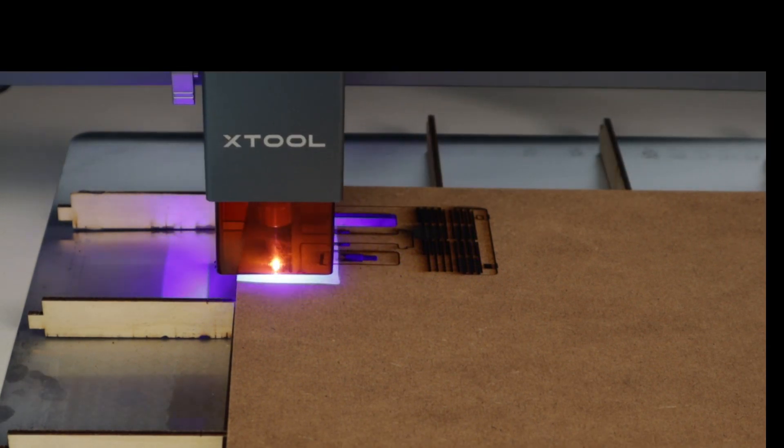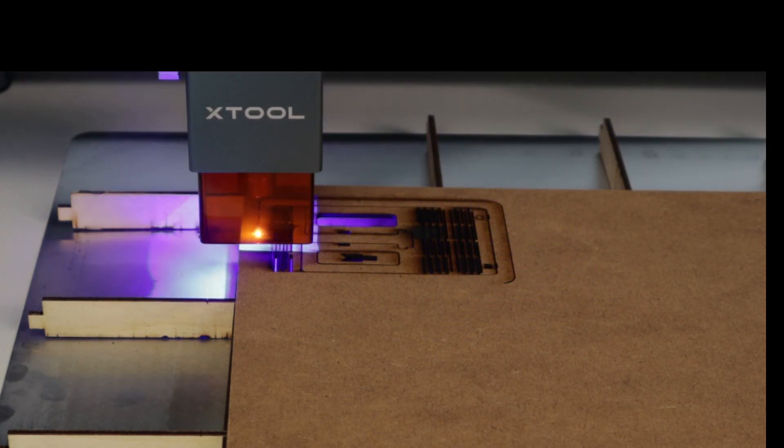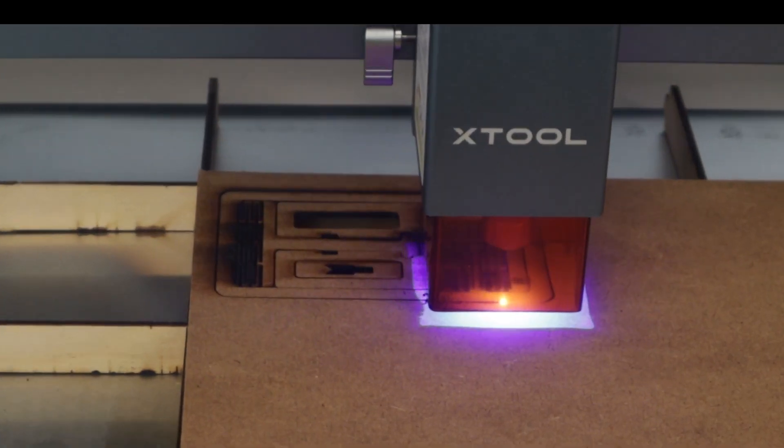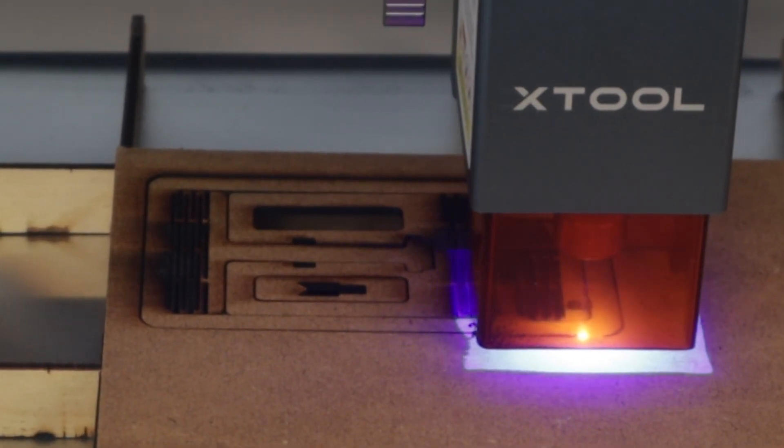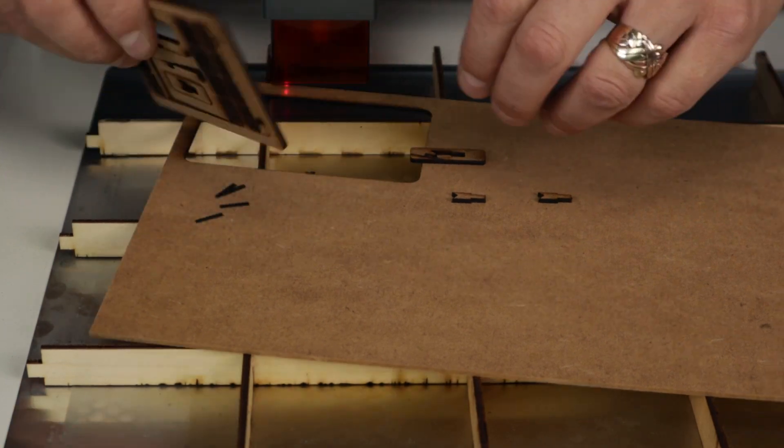The first bed we made was a square bed cut from plywood that worked really well but had one big drawback. Small pieces that we cut often fell through and were in danger of getting burnt from the other cuts. So we needed a bed with smaller gaps.